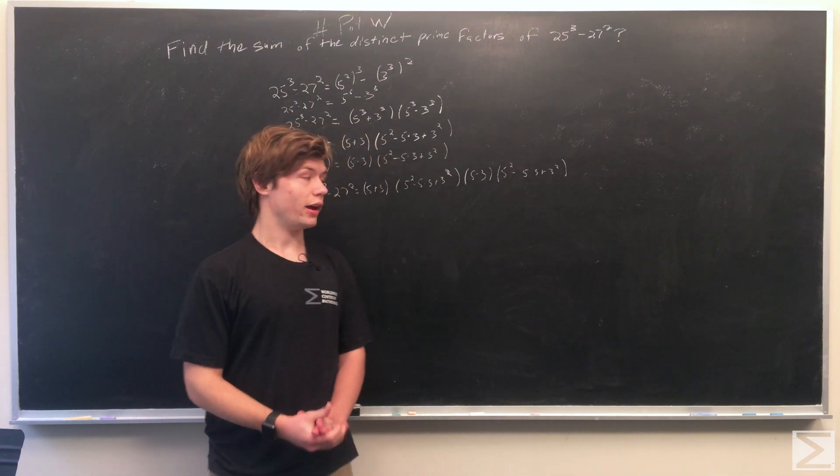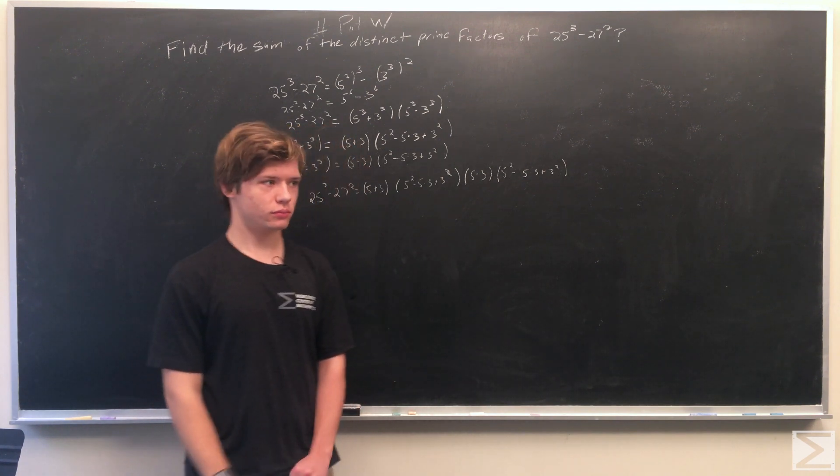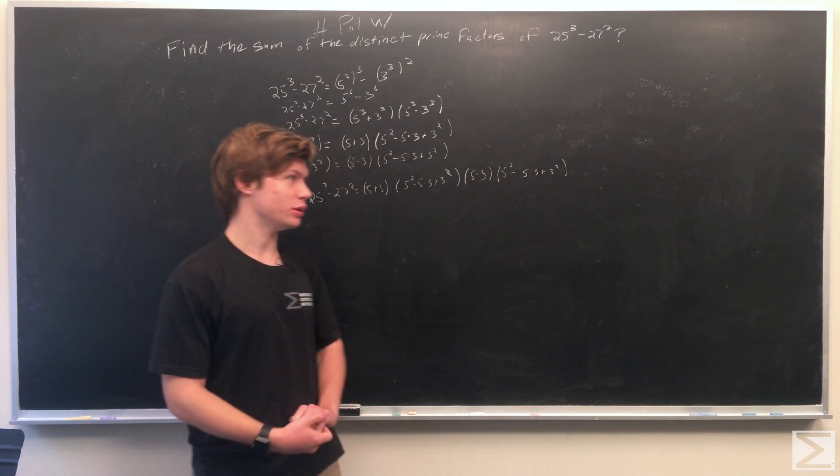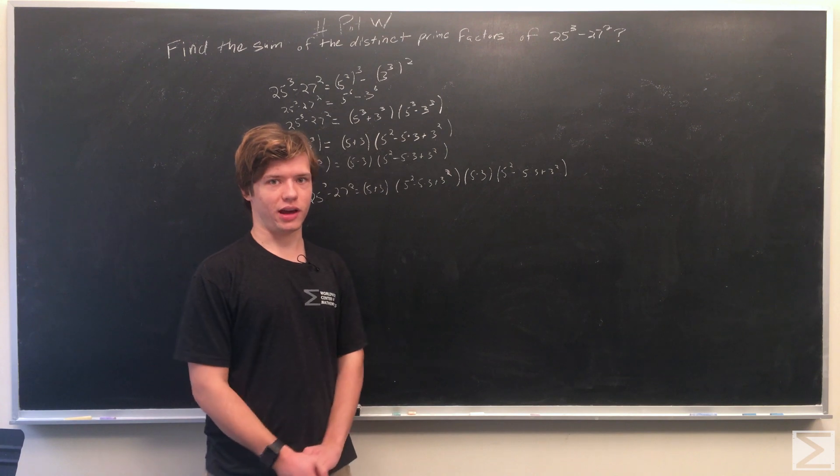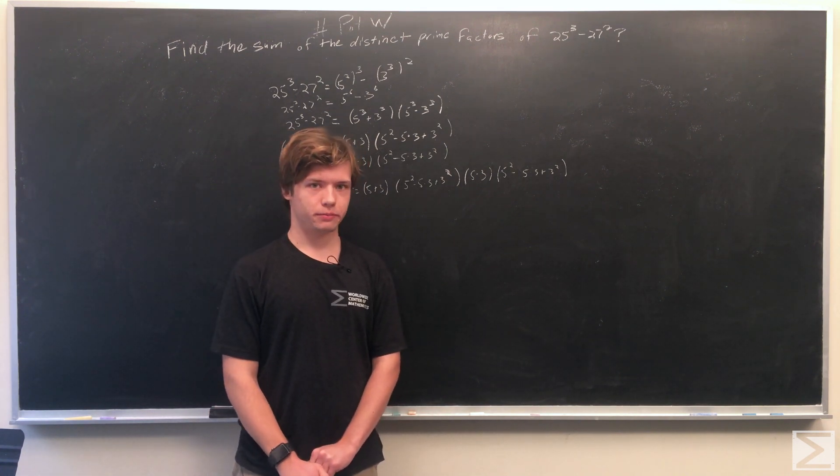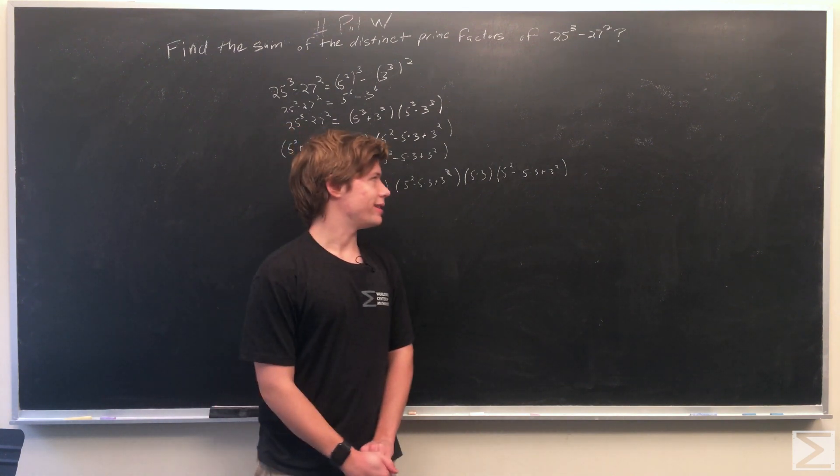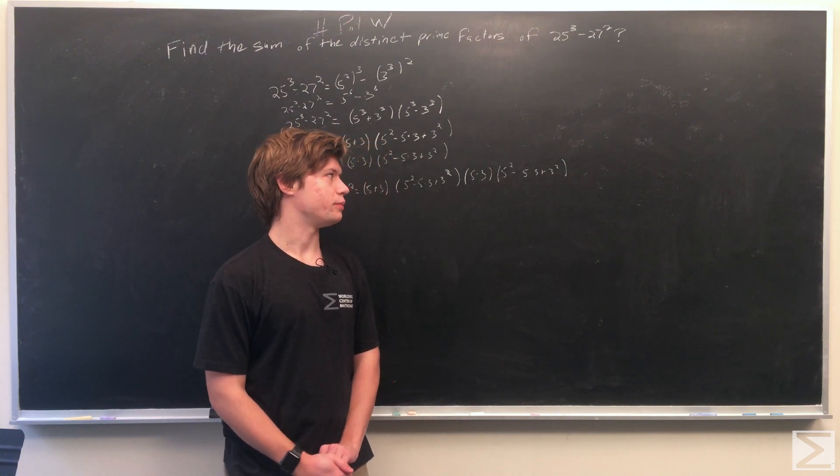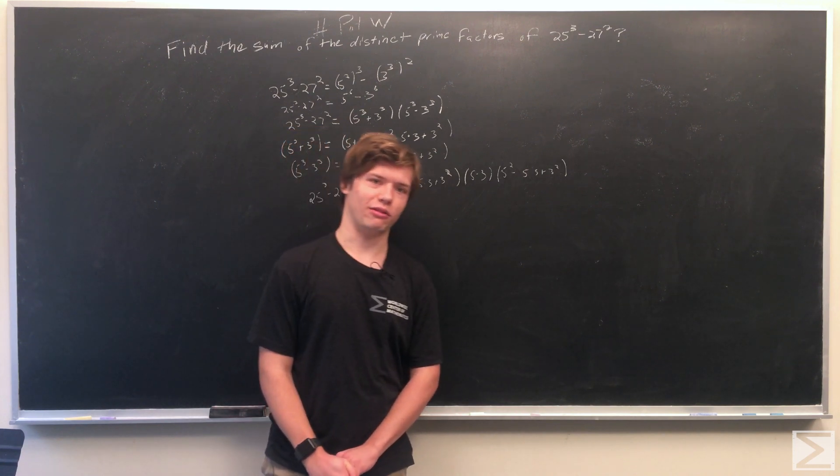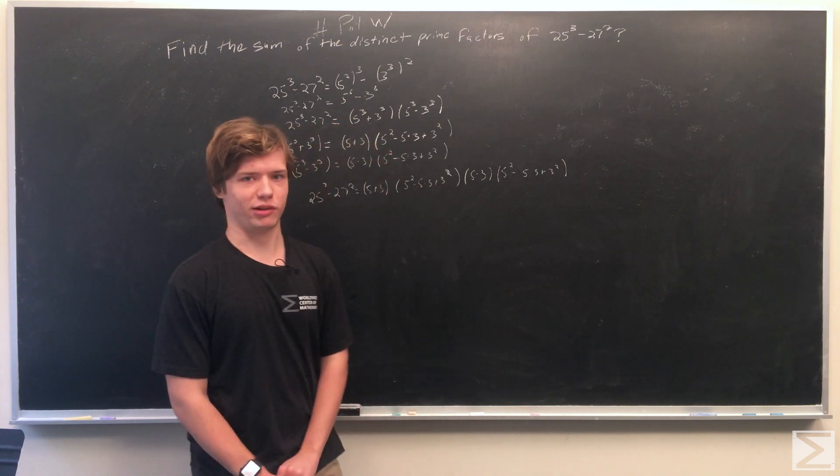So having plugged in the formulas for sum and difference of cubes, we find that the original expression is equal to 5 plus 3 times 5 squared minus 15 plus 3 squared times 5 minus 3 times 5 squared minus 15 plus 9. So now what we're going to do is we will just simplify all of the sums inside the parentheses.